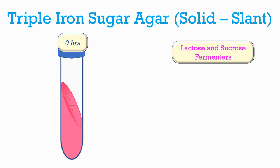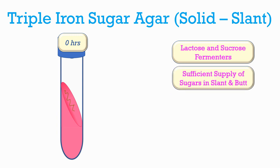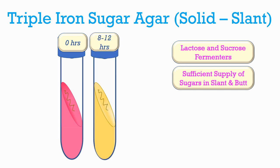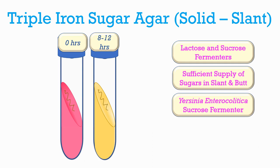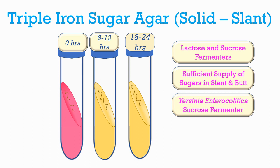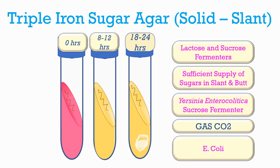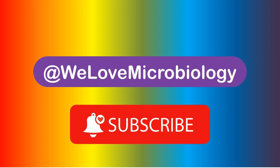Lactose and sucrose fermenting bacteria have a sufficient supply of these sugars throughout the medium, so the medium is uniformly yellow. Yersinia enterocolitica is a sucrose fermenter but does not ferment lactose; it has sufficient sucrose throughout, so the medium is uniformly yellow after 18 to 24 hours. Some bacteria can utilize all three sugars — lactose, sucrose, and glucose — and are likely to produce profuse carbon dioxide, potentially disrupting the medium. An example of such a bacterium is E. coli. That concludes the biochemical tests covered in this video.